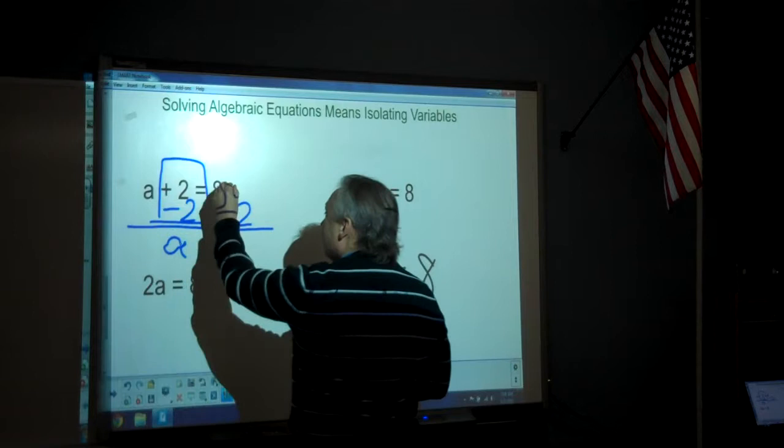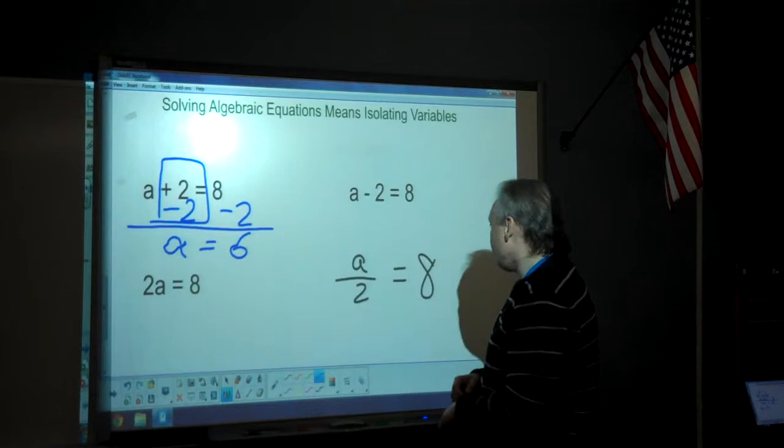Plus 2 and minus 2 cancel out and go away, and that leaves us with just a on this side. 8 minus 2 is 6. So in this case, a is equal to 6.